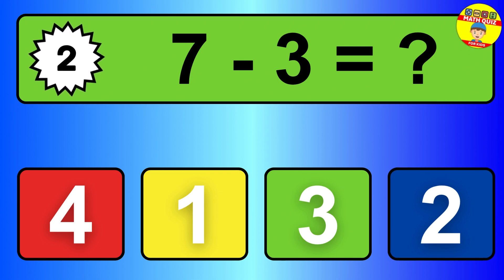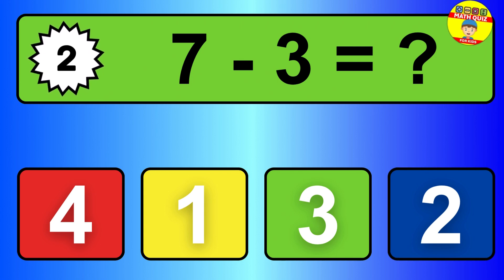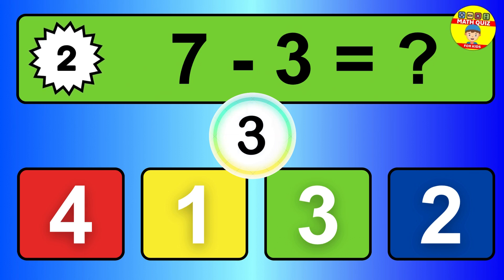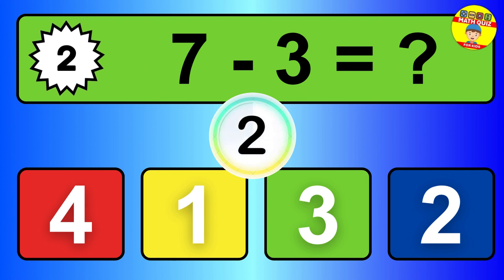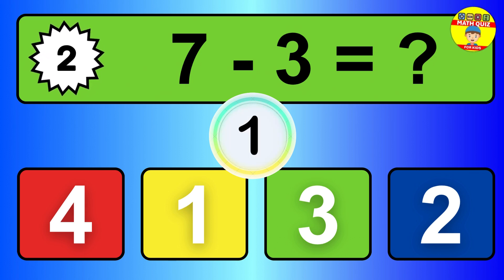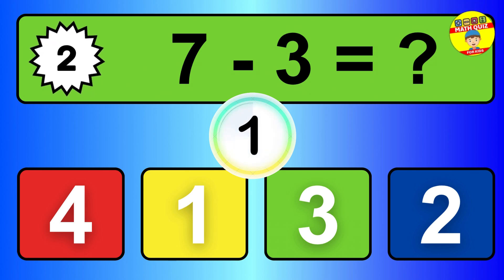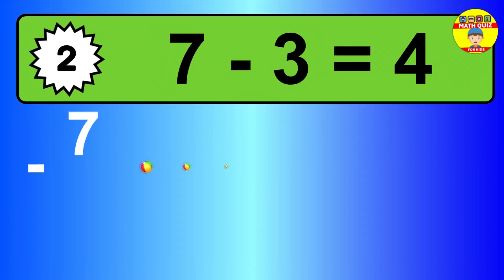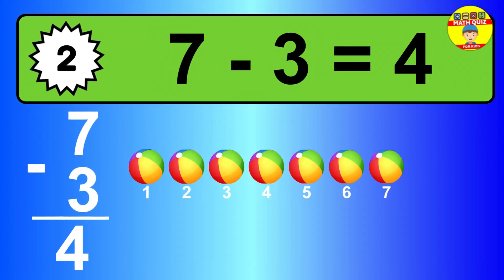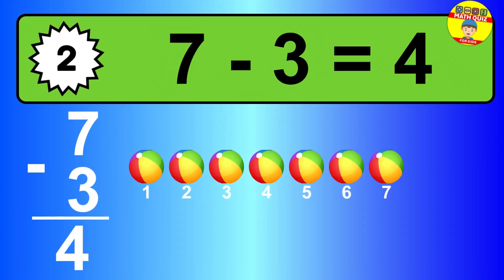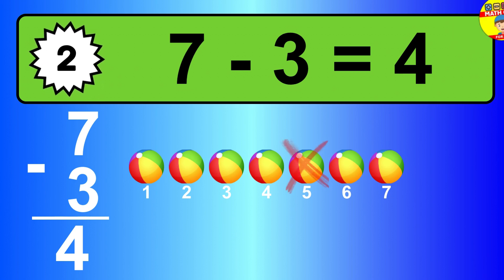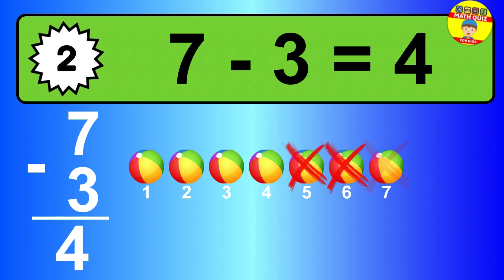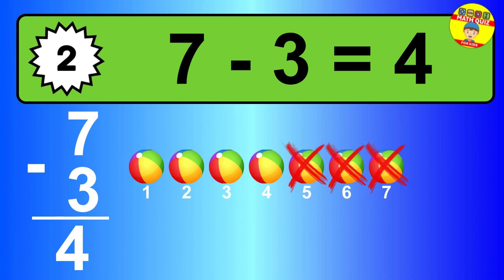Question two. Seven minus three equals what? So the answer is seven minus three is four. Let's count it. One, two, three, four.